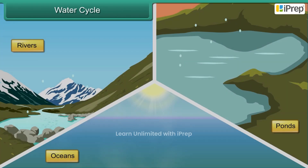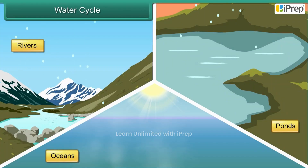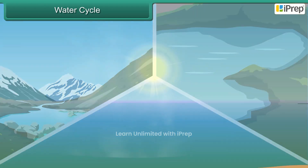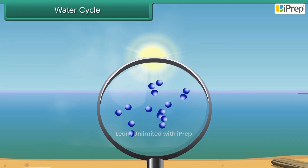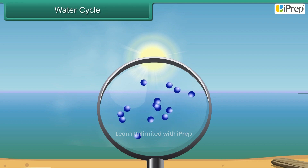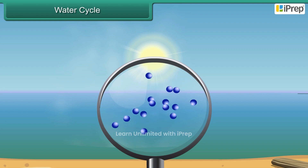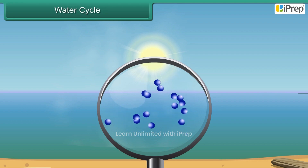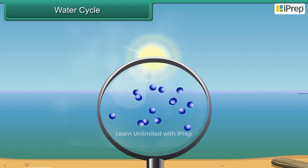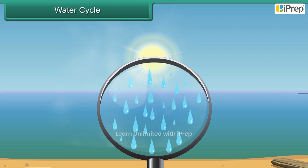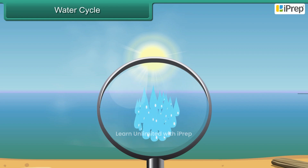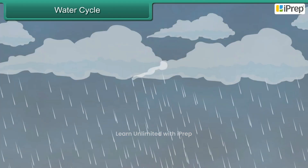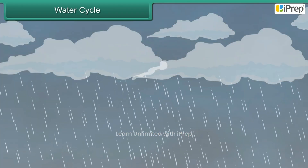Water cycle is the movement of water from earth to sky and then back to the earth. Water in ponds, rivers, and oceans gets heated by sun rays in the daytime. The heated water turns into water vapor and rises up. As it goes higher, the water vapor cools down, changing into water droplets. The droplets come together and form clouds, then fall on earth as rain.